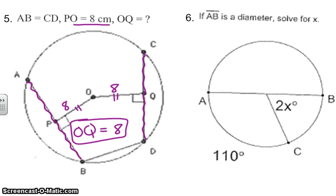Number six is a semicircle, because they told us this was a diameter. And all semicircles are 180 degrees, which leaves this to be 70 degrees. And if that's 70 degrees, we know central angles and intercepted arcs are going to be equal to each other. So 2X is equal to 70. Therefore, X is going to be equal to 35.